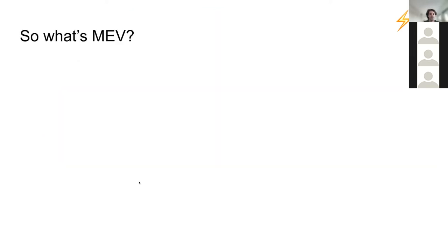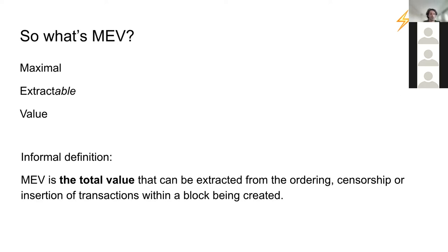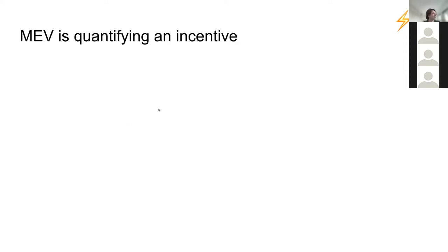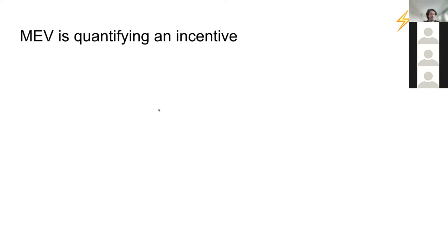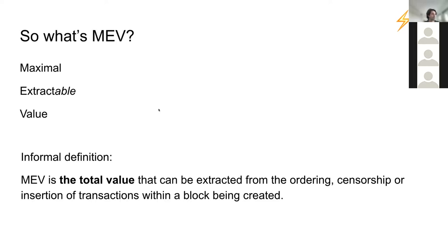So really, what's MEV? MEV is maximal extractable value. An informal definition: MEV is the total value that can be extracted from the ordering, censorship, or insertion of transactions within a block being created. Another way of looking at this is that MEV is quantifying an incentive — the incentive for someone to influence the ordering. The value that one can extract from influencing the ordering represents the incentive one has from doing so.